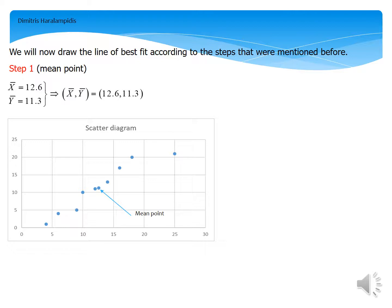Thus, our mean point is the point with coordinates 12.6 and 11.3. And as you can see in the graph in front of you, the mean point is denoted.